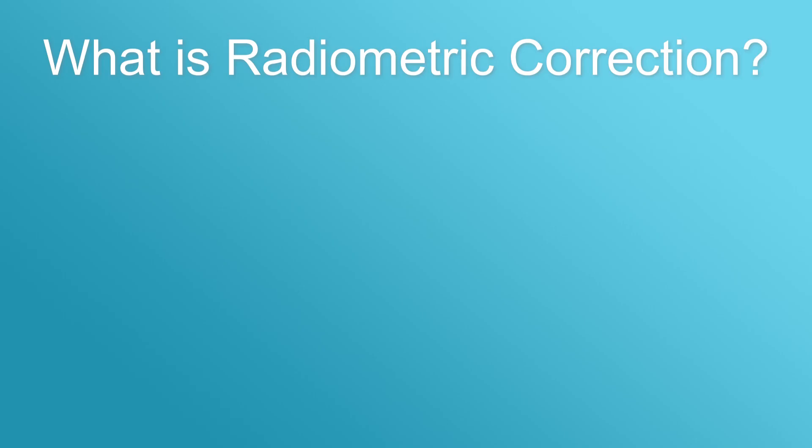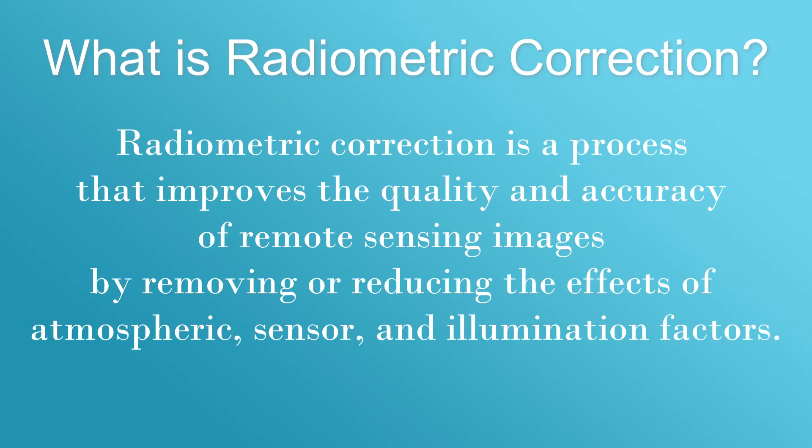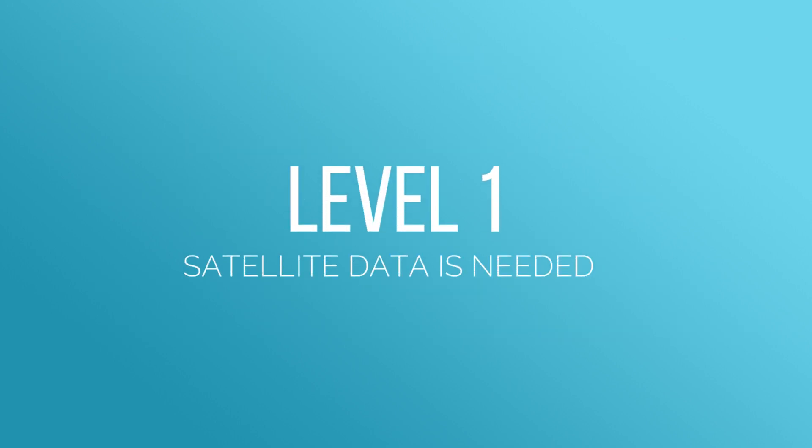What is radiometric correction? Radiometric correction is a process that improves the quality and accuracy of remote sensing images by removing or reducing the effects of atmosphere, sensor, or illumination factors. For this, you need level 1 satellite data.